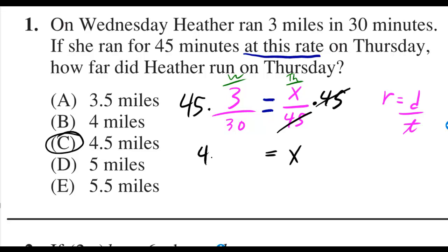So X is equal to 45 times 3 over 30, but then you cancel the 45 and the 30 to a 3 and a 2. Then 3 times 3 is 9, and you keep the over 2, but that's the same thing as 4.5.